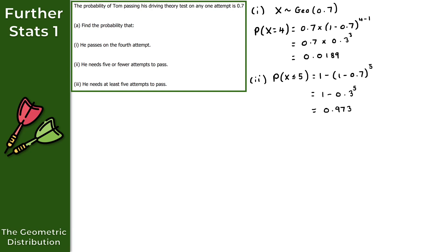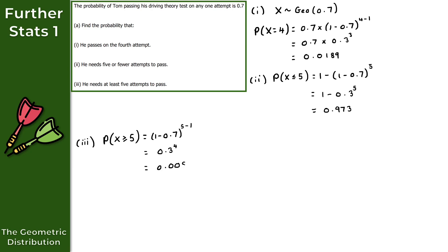For part three, we want the probability that Tom needs at least five attempts to pass, i.e., P(x ≥ 5). Using (1−p)^(x−1) = (1−0.7)^(5−1) = 0.3^4. Evaluating on a calculator gives 0.0081. That's the solution to the final part of question two, and that brings us to the end of this video on the geometric distribution.